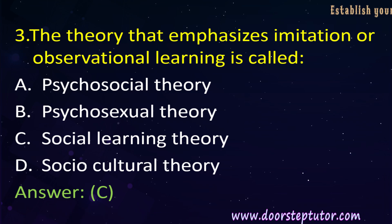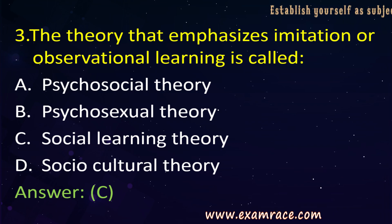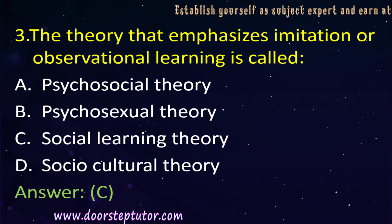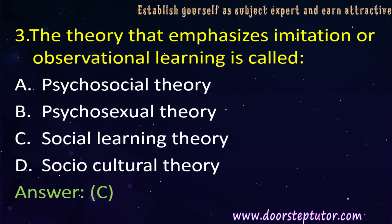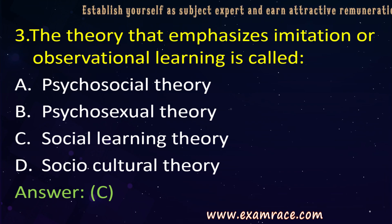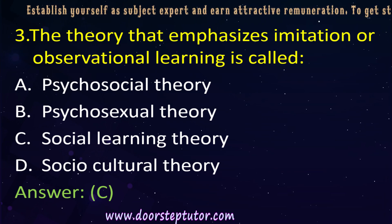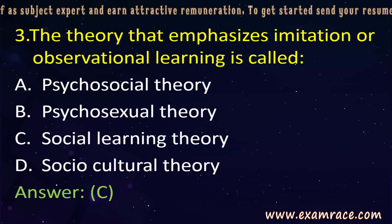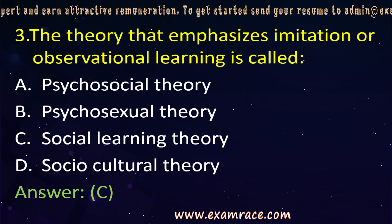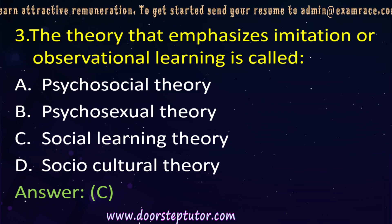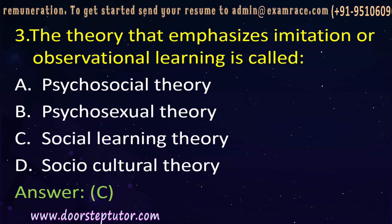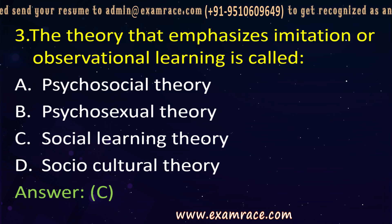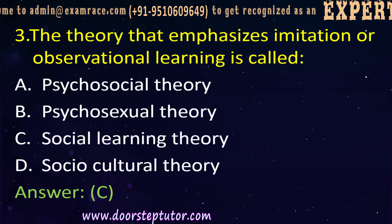The first stage is attention — before learning, the learner must be attentive and there should be no distractions. The next stage is retention — after giving attention, one should remember and retain all the things learned. After retention, there is reproduction of learned things, and then motivation. Proper motivation must be present for imitation or observational learning.